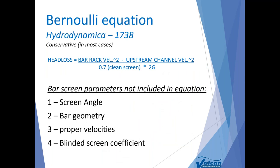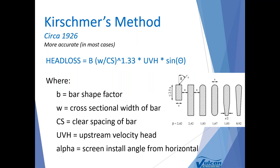Bernoulli's equation has been around for a very long time. It makes some assumptions and doesn't utilize screen angle or bar shape as parameters — two really important factors when looking at head loss across a screen. For that reason, we talk about Bernoulli's equation as the conservative approach. Bernoulli's is far more conservative in the head loss value it produces than the other method — Kirschmer's method.